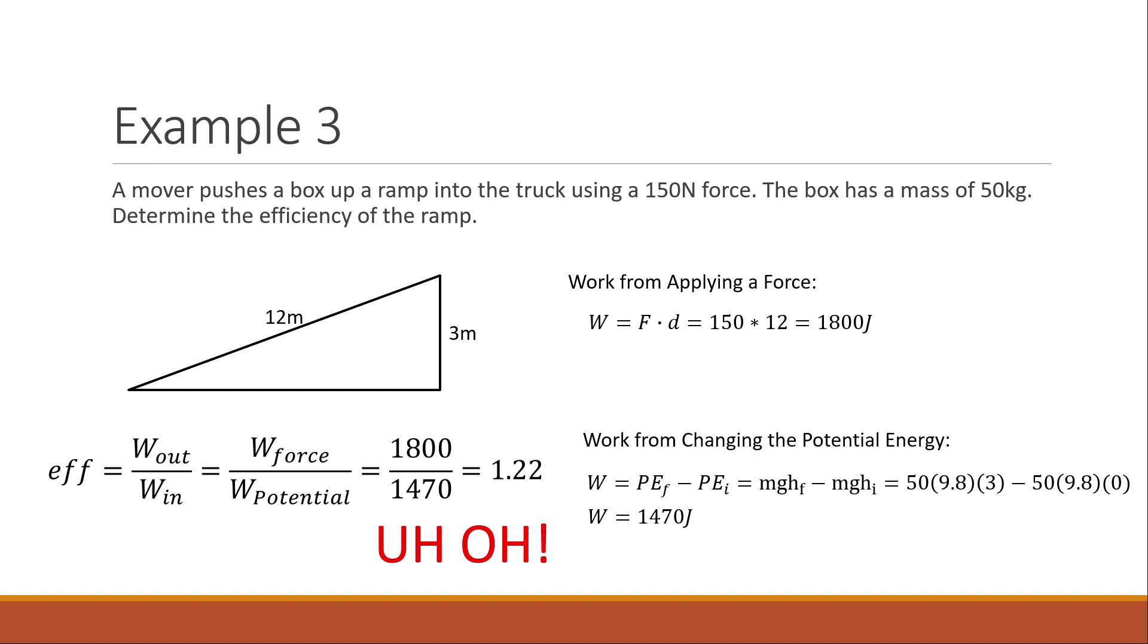Work potential over work force now flips it around, 0.82, 82% efficient. That's the correct answer. The whole point of me going through that is to say, hey, if you make a mistake, use that quick check. Your efficiency can never be over 100%, and if it is, then that means you just flip them and you'll be fine.